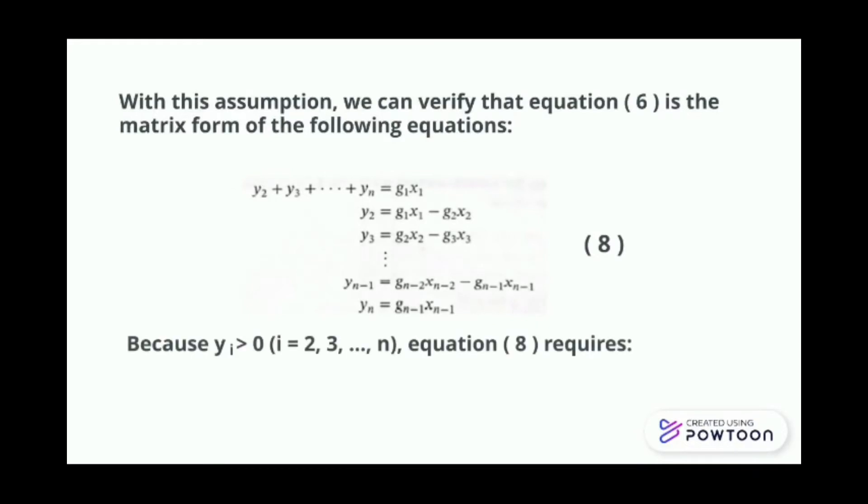Because yi is larger than 0 for i equals to 2, 3 until n, equation 8 requires g1 x1 larger or equal to g2 x2, until gn minus 1, xn minus 1 is larger or equal to 0. We label this as equation 9.